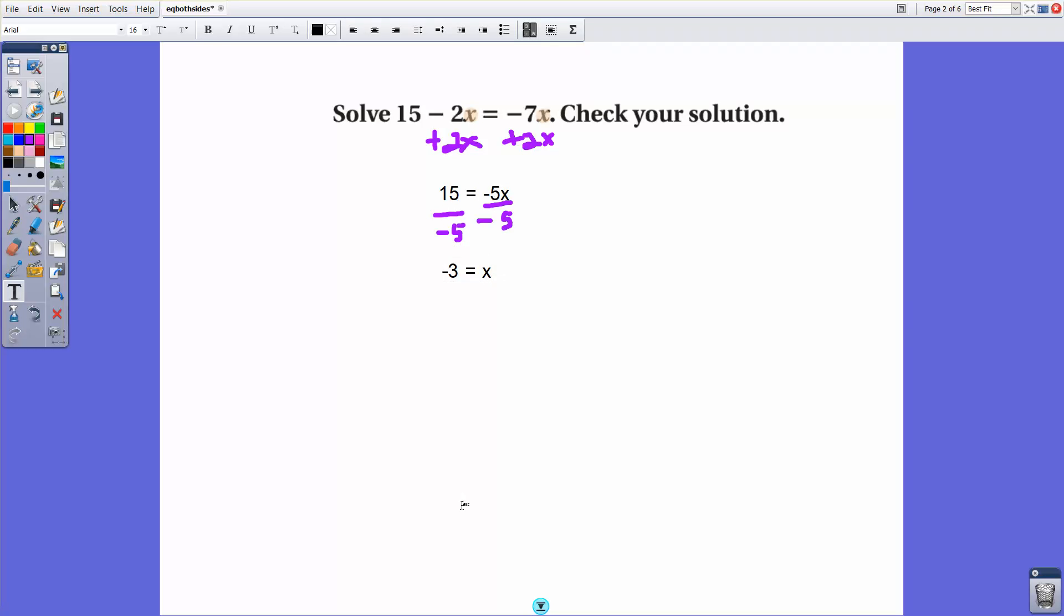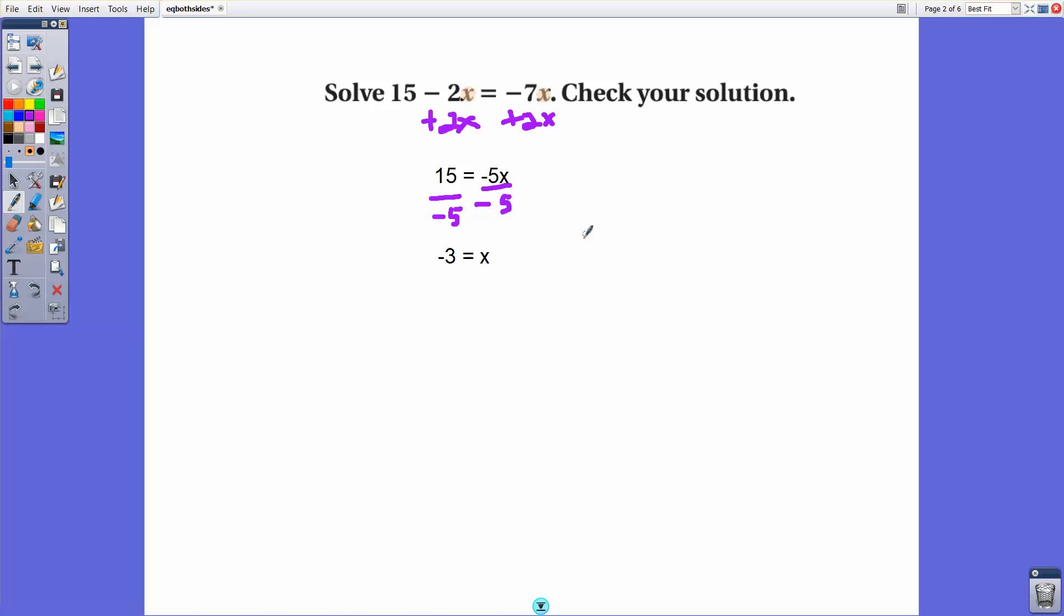Now in order to check our solution, we can just plug this number back in for x in our original equation and make sure we get the same number on both sides. Well, if I do negative 7 times negative 3, that's going to be positive 21. If I do 15 minus 2 times negative 3, that's negative 6. 15 minus negative 6 is like 15 plus 6. That is also 21. So this answer checks out.